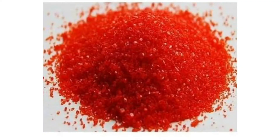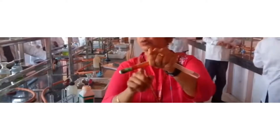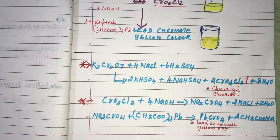This shows the red-orange crystals of Potassium Dichromate, the red-orange vapours produced, and the yellow precipitate formed. Here is the collection of the red-orange vapours in the second test tube.